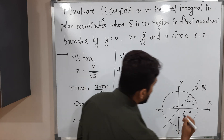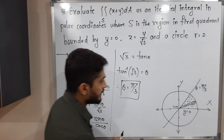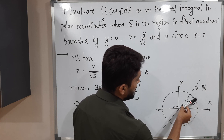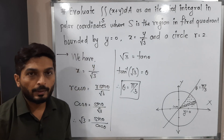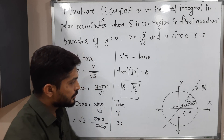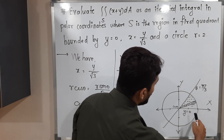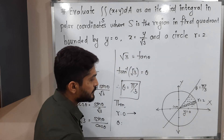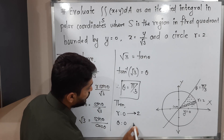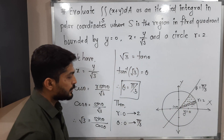In polar coordinates we always draw a strip that starts at the origin and moves anti-clockwise. The strip starts here, slowly moves to cover each and every point of the region, and goes up to the line θ equals π/3. So the limits of r are 0 to 2, and the limits of θ are 0 to π/3.